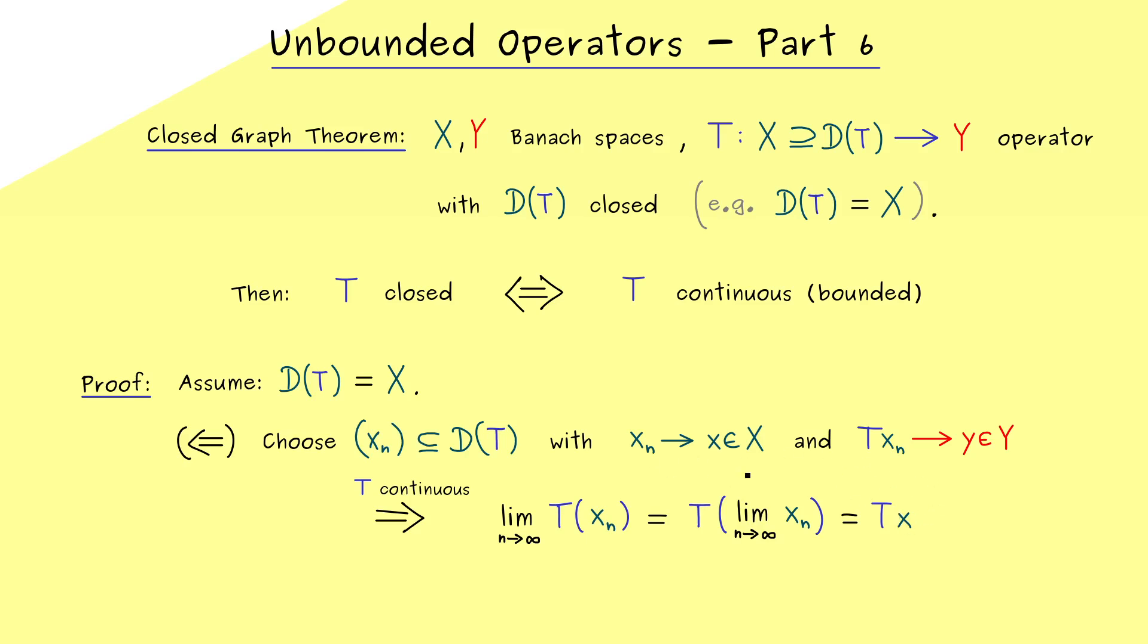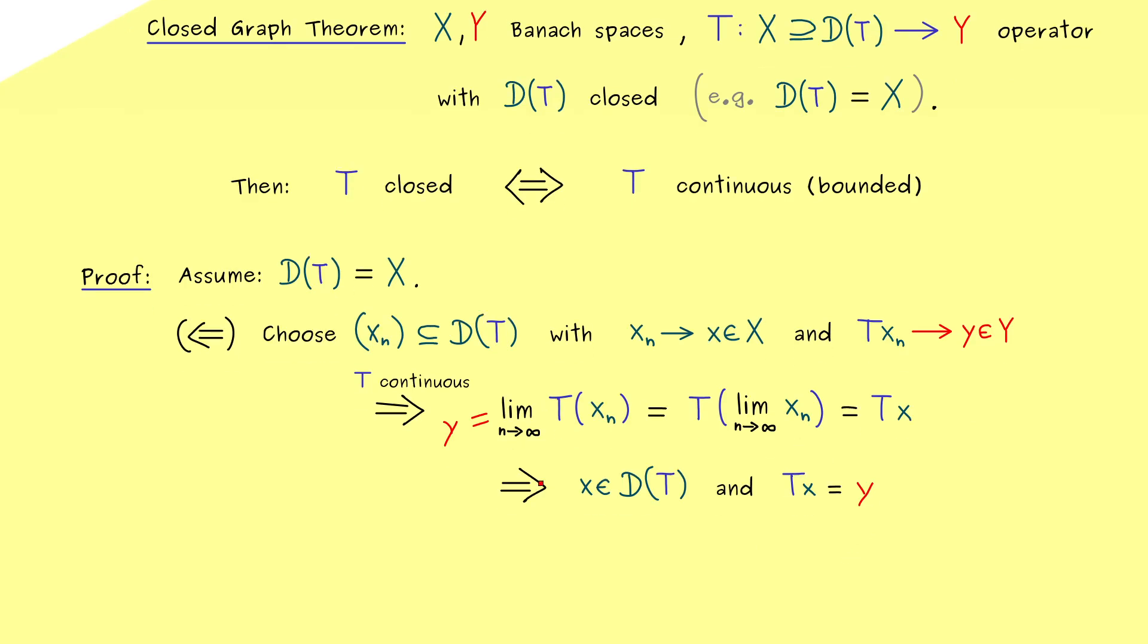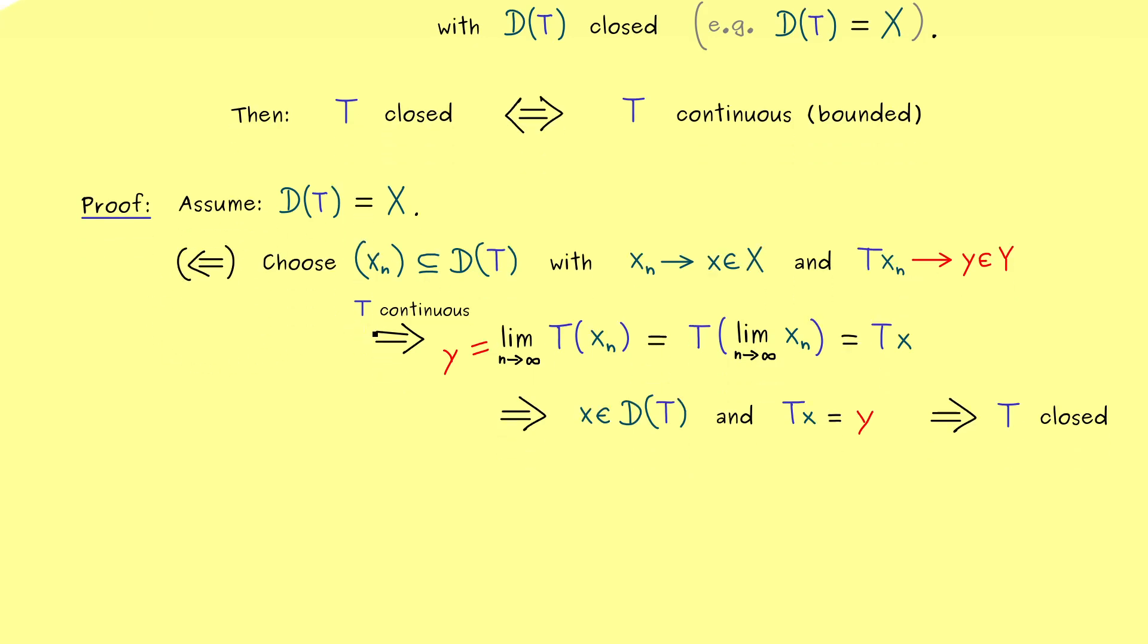Hence if we explicitly write that down, we have T of the limit of x_n. And by assumption this is the point x and it already lies in the domain of T. So of course the domain here is not a problem at all. However, please don't forget the other assumption here that the limit T(x_n) is already given as y. So in other words, you can say this left hand side here is equal to y. So what we have is that T(x) is equal to y, and that holds for all sequences with this assumption here. So more precisely, we have exactly this implication here, and this means that the operator T is closed. But of course we already knew that this direction here is not the hard one.